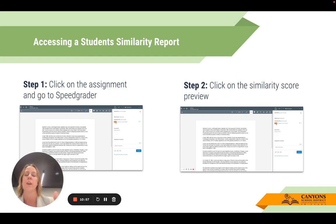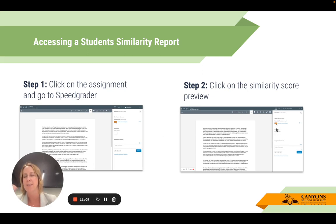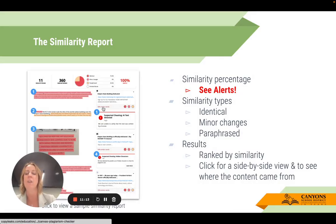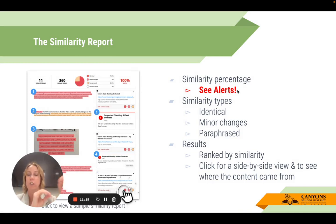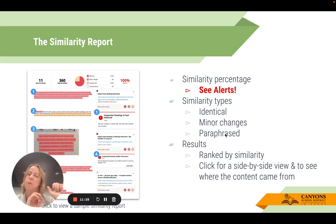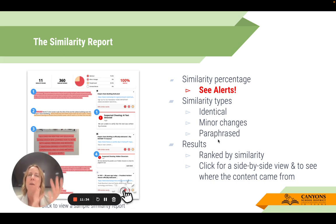Another way you can do that while grading is when you're in Speed Grader and view the submission on the right-hand side, you'll see a similarity score preview — a color-coded icon with a percentage. When you click on that, it takes you into the similarity report where you can see alerts. The alert is what will notify you that AI was detected. It identifies the similarity types — if it's identical word for word, if there were minor changes, or if it was paraphrased. I actually find the paraphrase detection interesting.